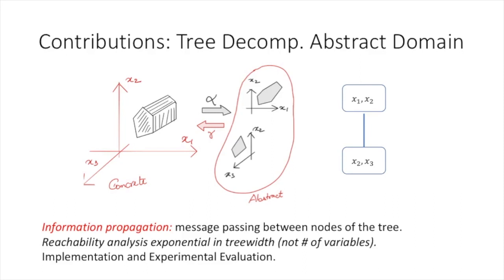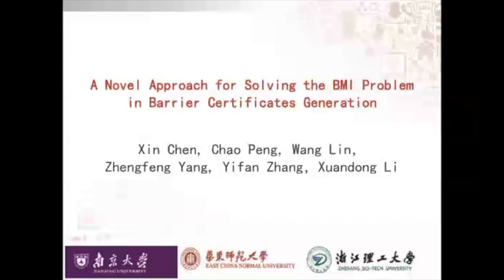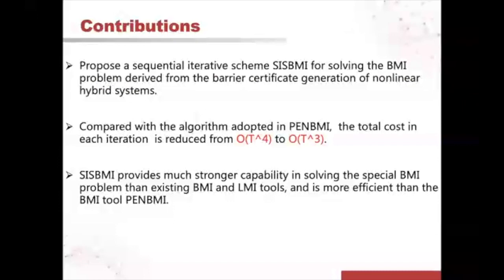The title of our paper is A Novel Approach for Solving the BMI Problem in Barrier Certificate Generation, authored by Xin Chen, Chao Peng, Wang Li, Dunfeng Yang, Yifan Zhang, and Xuanzong Li. We propose a sequential scheme SIS-BMI for solving the BMI problem, derived from the barrier-certificate generation of nonlinear hybrid systems. Compared with PM-BMI, the total cost in each iteration is reduced from quartic to cubic. Our method provides much stronger capability in solving the special BMI problem than PM-BMI and SOS tools, and is more efficient than PM-BMI.